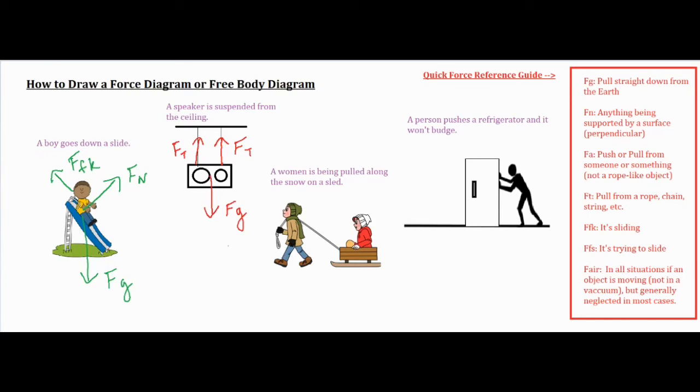For our next one, we have a woman is being pulled along the snow on a sled. As I said before, you have to focus your attention on a certain object. So I'm going to focus my attention on the woman and the sled together. I'm going to treat that like one unit and then draw my force diagram from there. So I have my force of gravity pulling straight down.